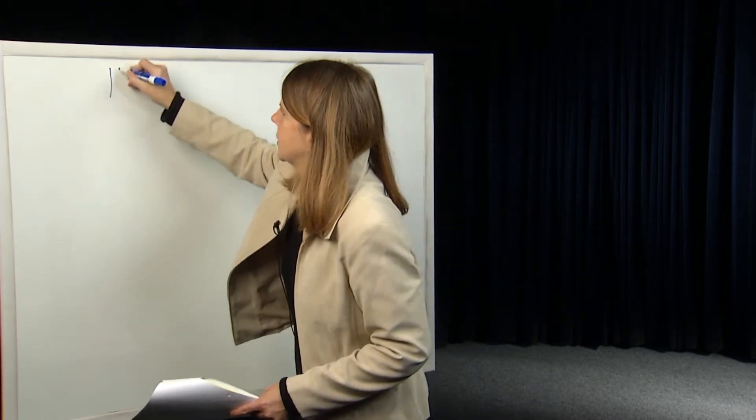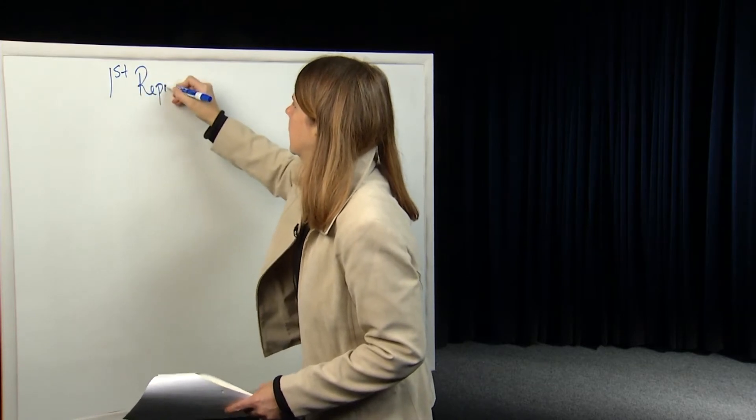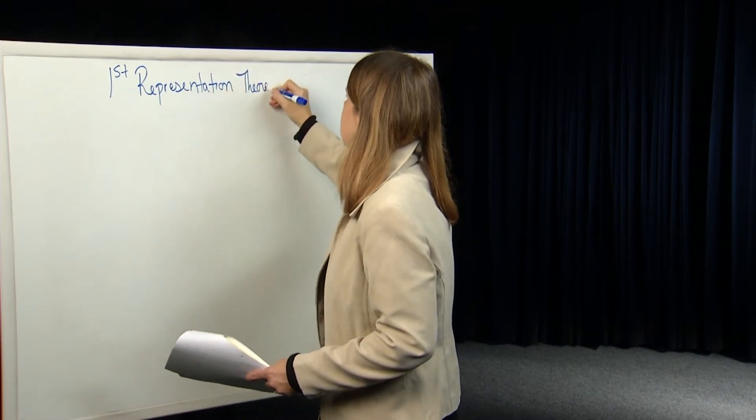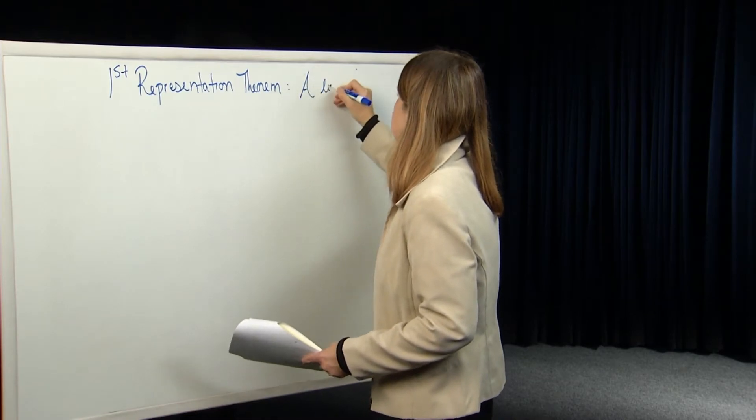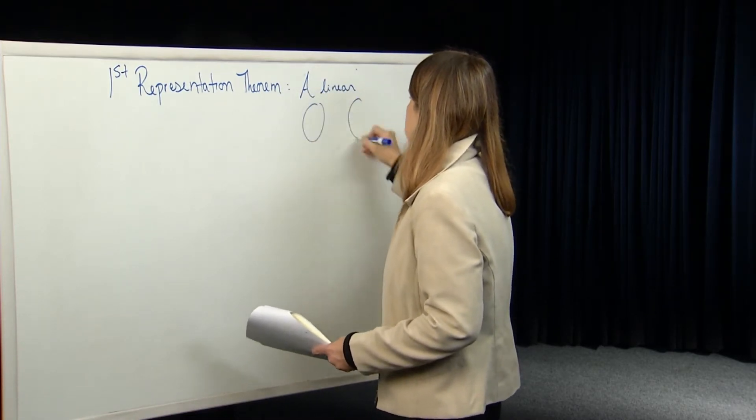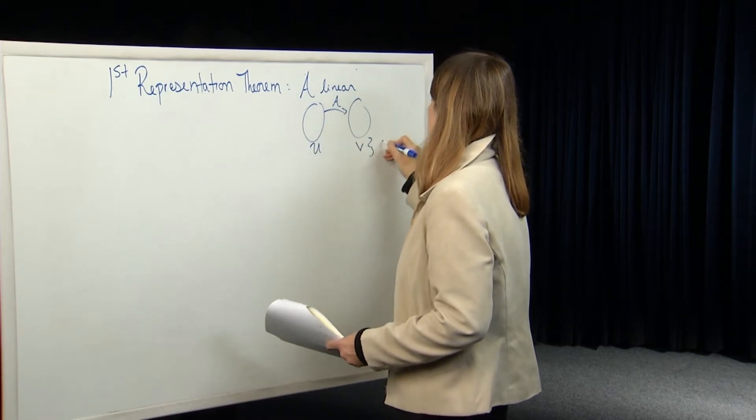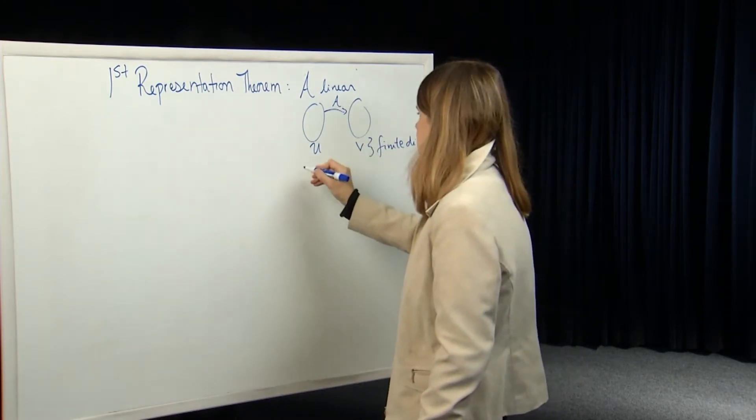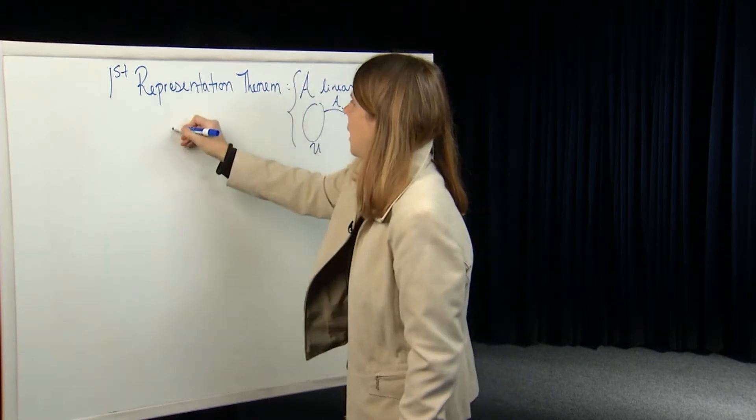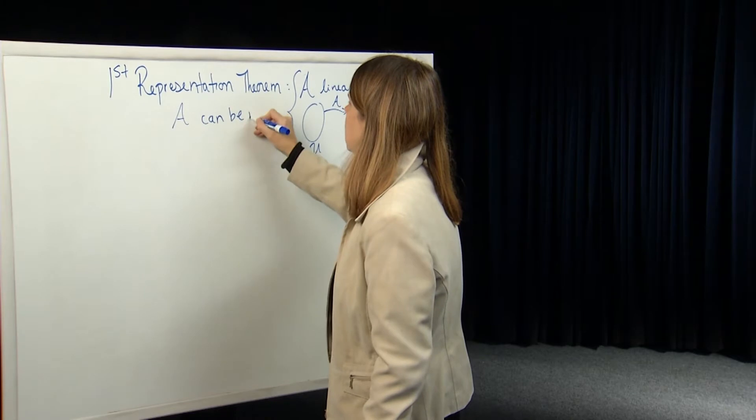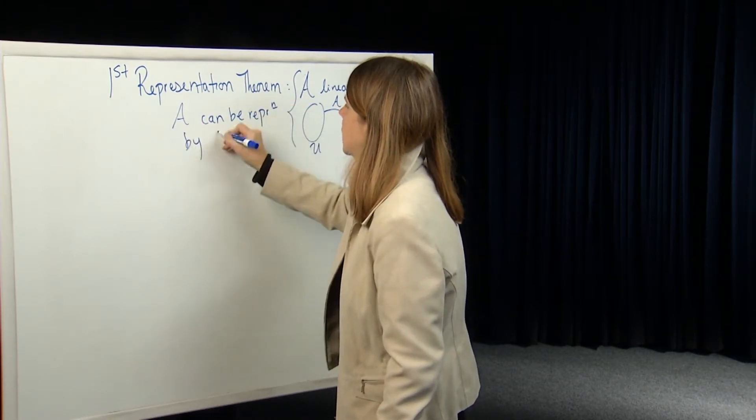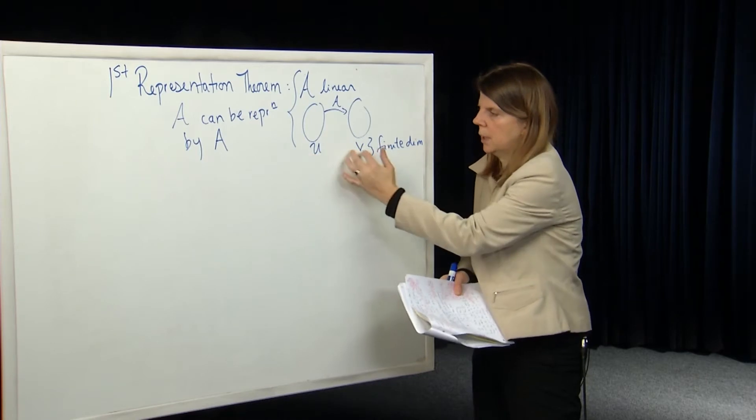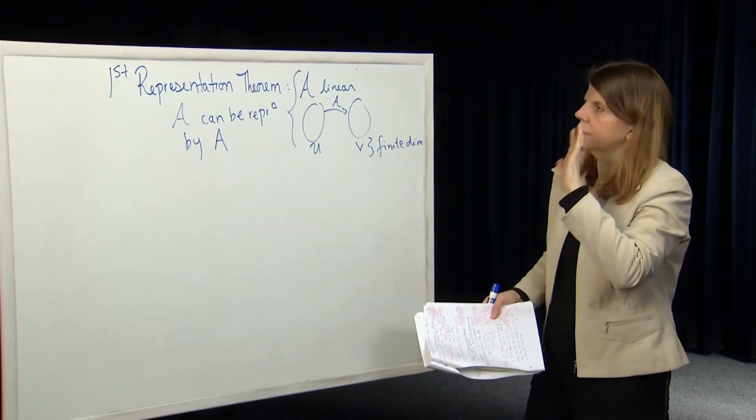So the first representation theorem, actually we just called it the fundamental theorem or the representation theorem. But now that we have a second one, we'll call it the first representation theorem, is that any linear map A, so A is linear, and it's going between finite dimensional vector spaces. So here U and V are finite dimensional, meaning they have a finite dimensional basis. It can be represented by matrix multiplication. So A can be represented by a matrix A, which is going to depend on the bases that you choose for the domain and the codomain respectively.